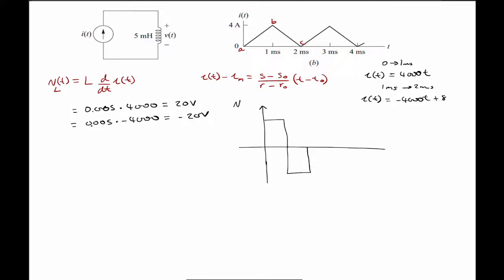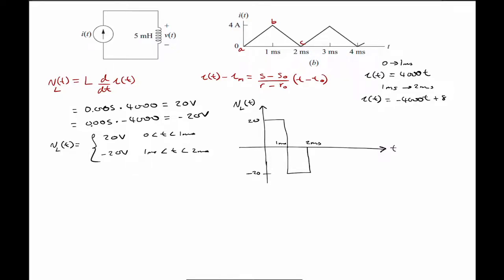Our inductor voltage graph shows +20 volts from 0 to 1 millisecond and −20 volts from 1 to 2 milliseconds. So the inductor voltage is a piecewise function: V(t) = 20 V for 0 to 1 ms, and V(t) = −20 V for 1 to 2 ms.